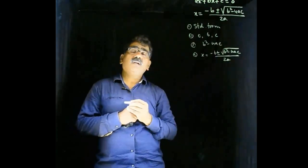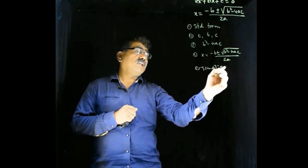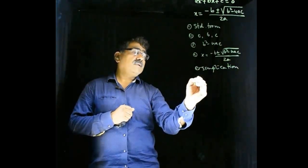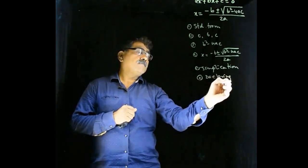B square minus 4ac upon 2a. And fifth, simplification. That is also important. Simplification. And last, declaring the roots.